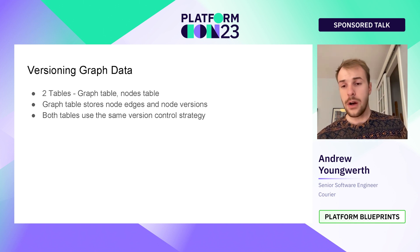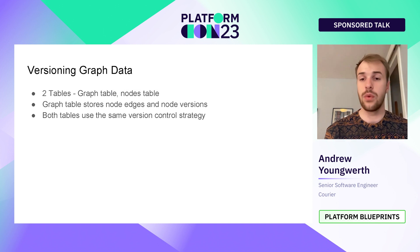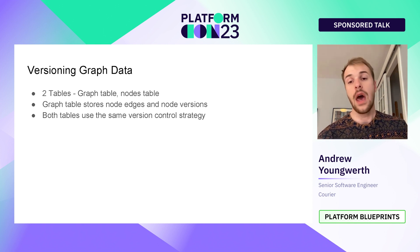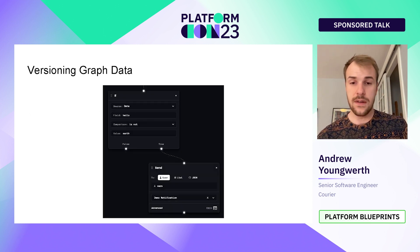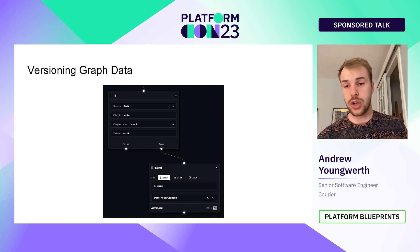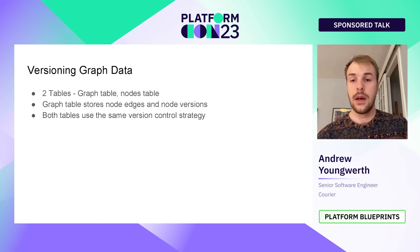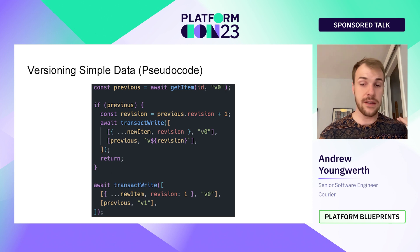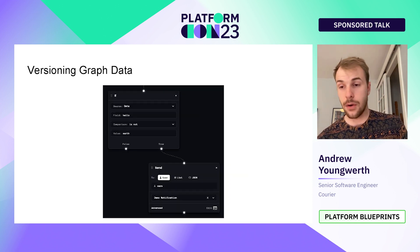In Courier's implementation of versioned graph data, we use two tables. One represents and stores the whole graph, and the other stores the nodes. The graph table stores all the edges — those connections defined between each node — and stores a copy of what version each node was on when we made our last revision. Both tables use an identical version control strategy, so the pseudocode from earlier applies to both the nodes table and the graph table.